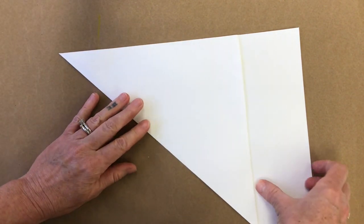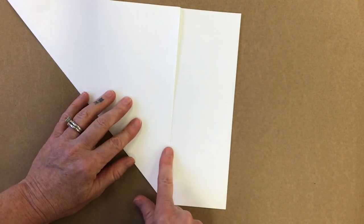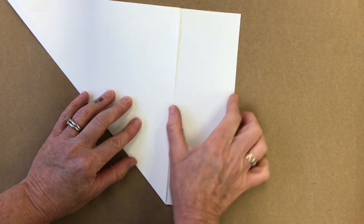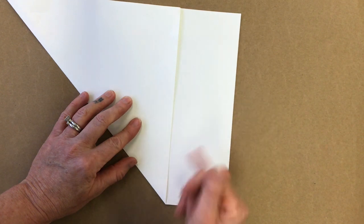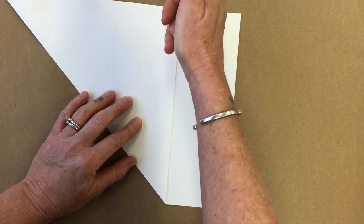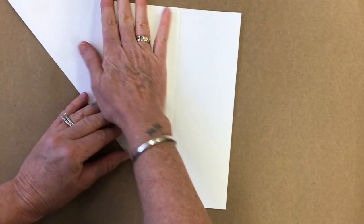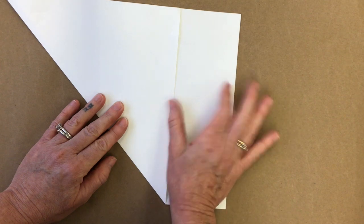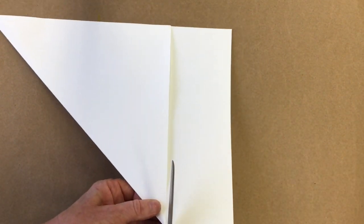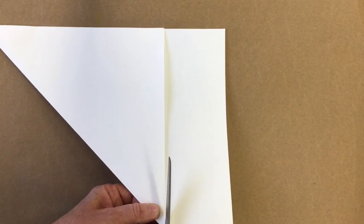Now the secret is anything past this edge of the paper is what becomes the rectangle. If you cut right along here as close as possible to that edge, what you have left is a perfect square, and this extra rectangle you can set aside to doodle on, or do something with, or even recycle it.